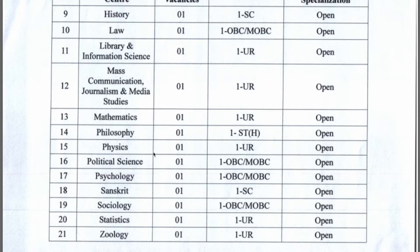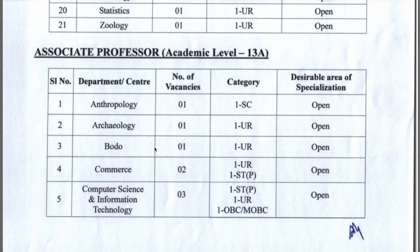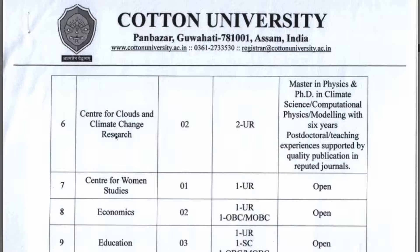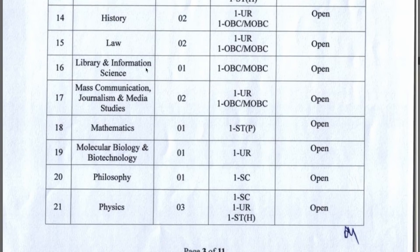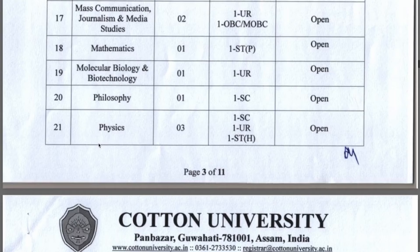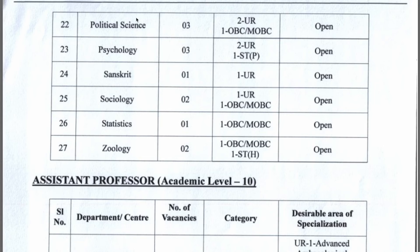Next is Associate Professor, with dedicated distribution across departments. There is no reservation benefit here in terms of age and marks. The Associate Professor category covers 27 departments including: Anthropology, Archaeology, Botany, Commerce, Computer Science and IT, Centre for Clouds and Climate, Centre for Women's Studies, Economics, Education, English, Environmental Biology, Geology, Hindi, History, Law, Library and Information Science, Mass Communication, Journalism, Media Studies, Mathematics, Molecular Biology and Biotechnology, Philosophy, Physics, Political Science, and Psychology.